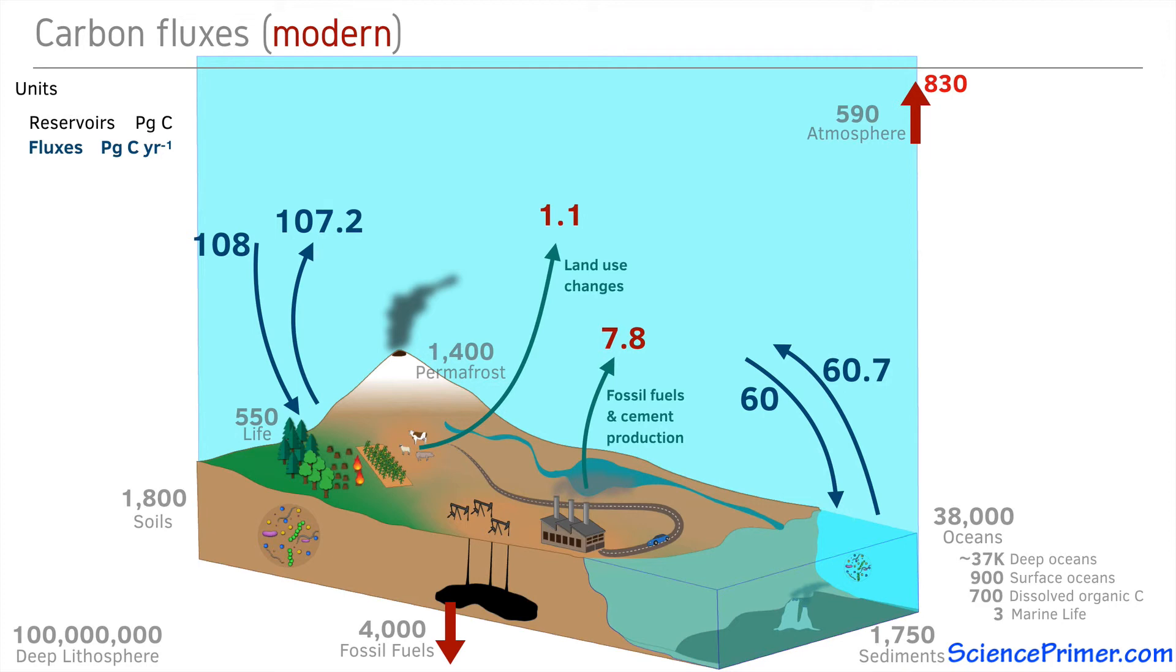Not all of the carbon that has been put into the atmosphere has remained there. Other fluxes have responded to increased concentrations of carbon in the atmosphere. Carbon dioxide is an input to photosynthesis, and increased availability of carbon dioxide has caused the flux from the atmosphere to the biosphere to increase from about 108 to 123 petagrams of carbon per year. Respiration from the biosphere back to the atmosphere has also increased, but not as much, increasing from about 107 to about 118 petagrams of carbon per year.